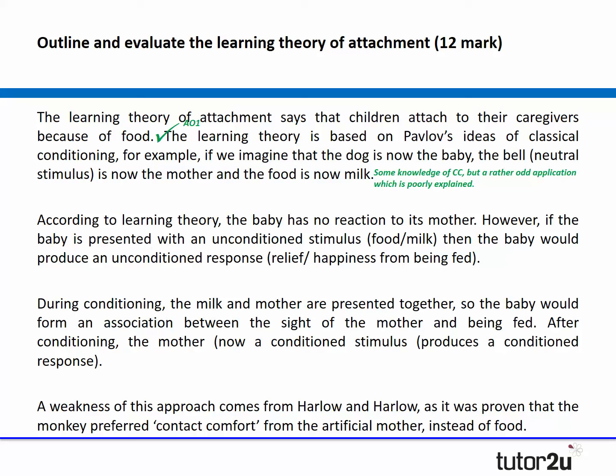The answer continues: 'According to learning theory, the baby has no reaction to its mother. However, if the baby is presented with an unconditioned stimulus — food and milk — then the baby will produce an unconditioned response of relief and happiness from being fed.' There's an odd use of the word 'produce' and again some knowledge of classical conditioning is being presented but it's not the clearest explanation. 'During conditioning, the milk and the mother are presented together so that the baby would form an association' — they've used a specialist term there — 'between the sight of the mother and being fed. After conditioning, the mother, which is now a conditioned stimulus, produces a conditioned response.' Not a bad attempt, but further elaboration is clearly required to make this explanation a valid one.